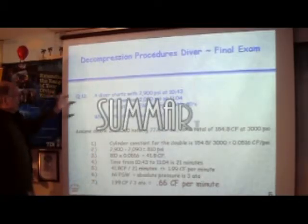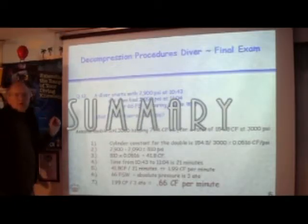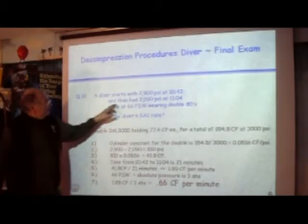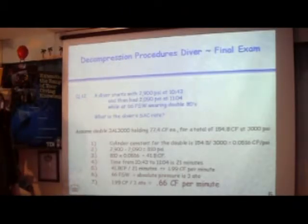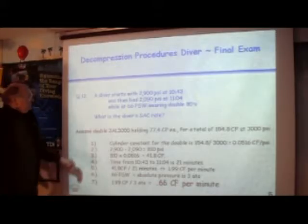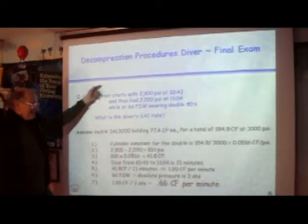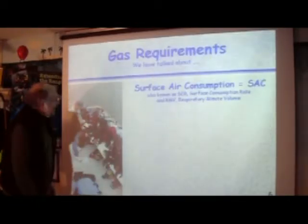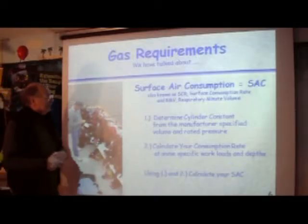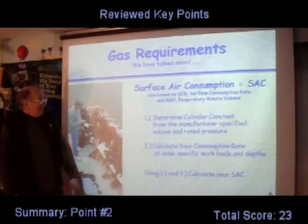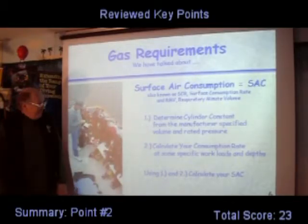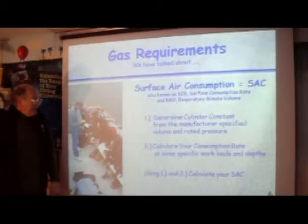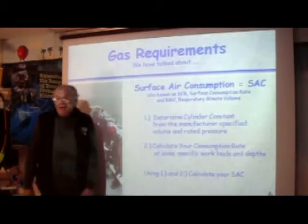Now you are able to answer question number 12: A diver starts with 2,900 PSI at 1043 and then has 2,090 PSI at 1104 while at 66 feet of sea water wearing double 80s. What is the diver's SAC rate? The answer you calculated: 0.66 cubic feet per minute. We've now talked about surface air consumption — how to get it by determining the cylinder constant from the manufacturer's specified volume and rated pressure, then the consumption rate at a specific depth and workload, then combining these two numbers to get the surface air consumption.